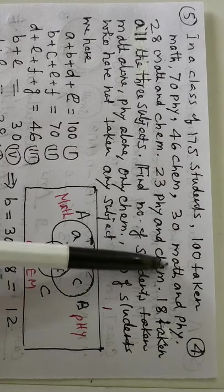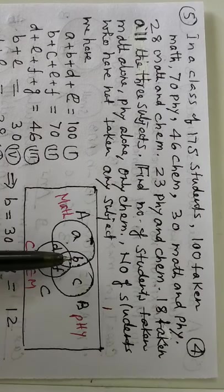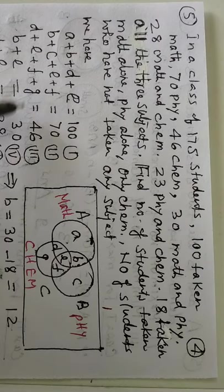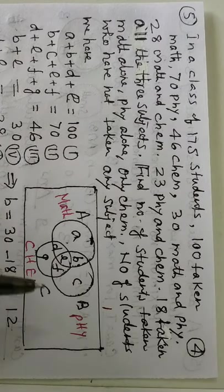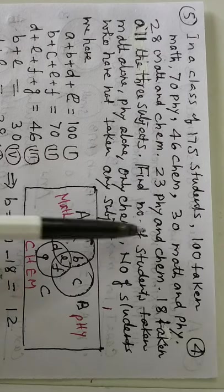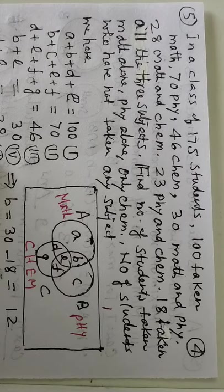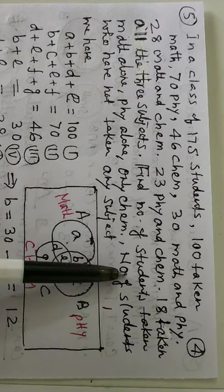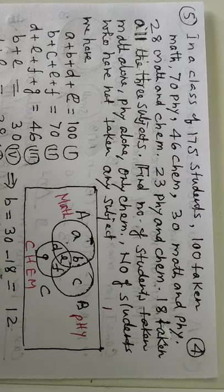Now, 30 maths and physics. Math and physics. This is B and E. So, B plus E, 30. Then, 28 math and chemistry. Math and chemistry. D and E, D, E, 28. After that, 23 physics and chemistry. Physics and chemistry. E, F, 23. And all the three subjects. 18 taken all the three subjects. Means E is 18.